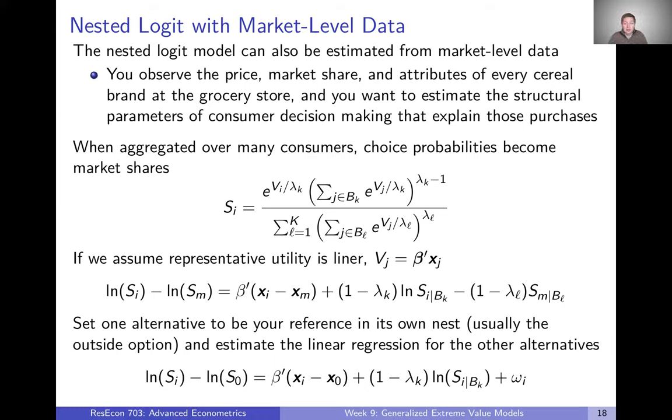Well, when you think about taking choice probabilities and aggregating them up over many consumers facing the same choice setting, so you have hundreds of people going into the grocery store and going into the cereal aisle every day, every one of those people is going to have a choice probability. If we think about adding those up over all of the consumers, what we end up with are actually market shares. So if our choice probability says that people have a 20% chance of choosing cereal X, by the law of large numbers, if we observe enough people making this choice, then we should see 20% of shoppers buying that particular cereal.